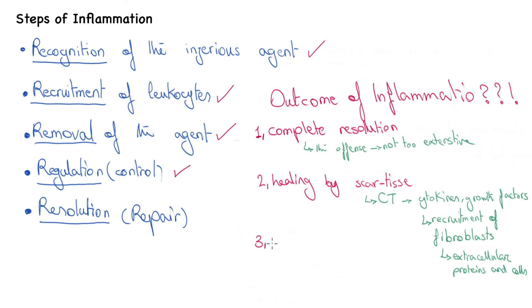Another possibility would be the progression of the acute inflammation into a chronic inflammation. This happens in the case of persistent injurious agent or interference with the healing process.